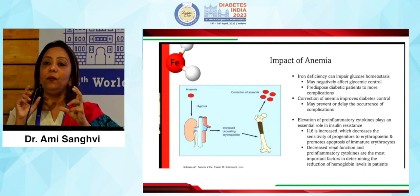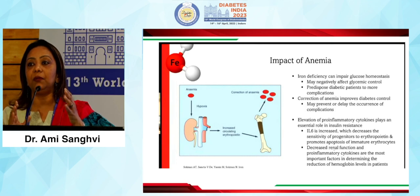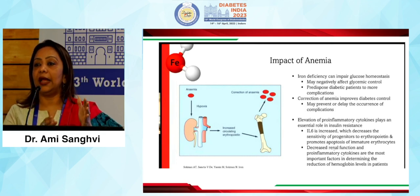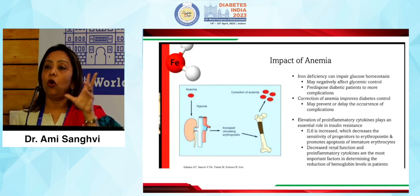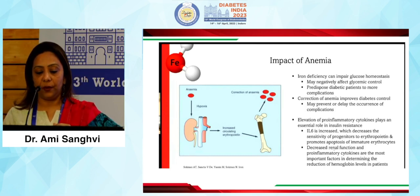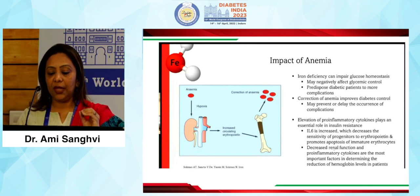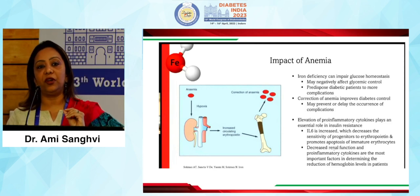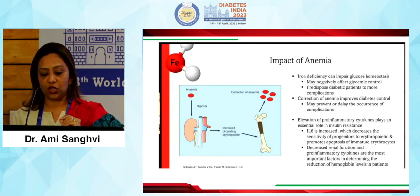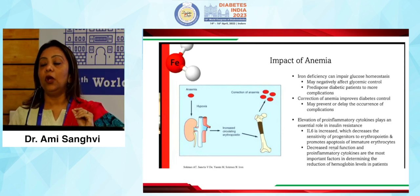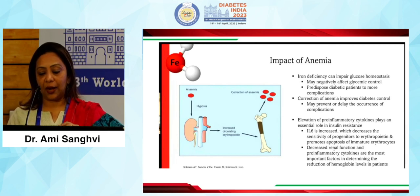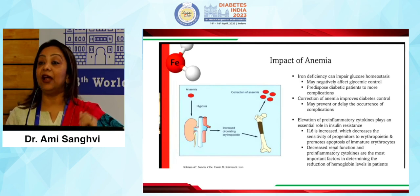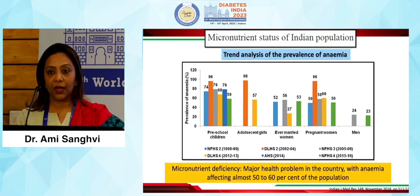You have to maintain that thin line between having good iron levels and not very high iron levels. We all know that diabetes is an inflammatory disorder, and inflammatory cytokines disrupt progenitor proteins, promote apoptosis of immature erythrocytes, and lead to anemia.